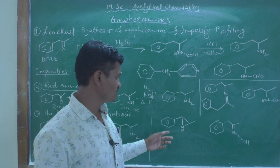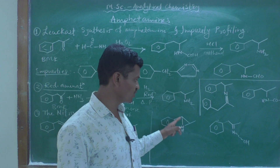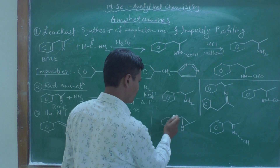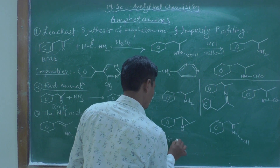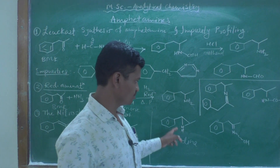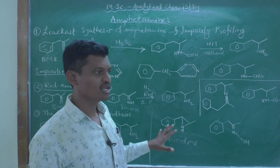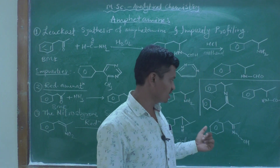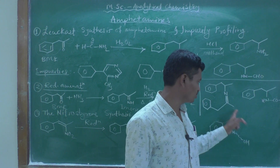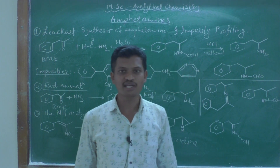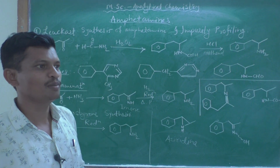Since this is a different method, different impurities are formed. One impurity is 1-methyl-2-phenylaziridine — aziridine is a three-membered ring containing nitrogen, and this aziridine ring is formed as an impurity. The other most widely encountered impurity in this nitrostyrene synthesis is the oxime derivative of benzyl methyl ketone, where an N-OH group is formed as an impurity.